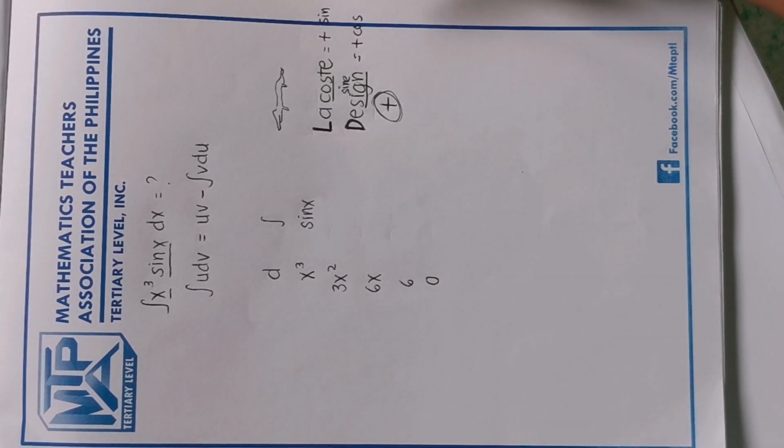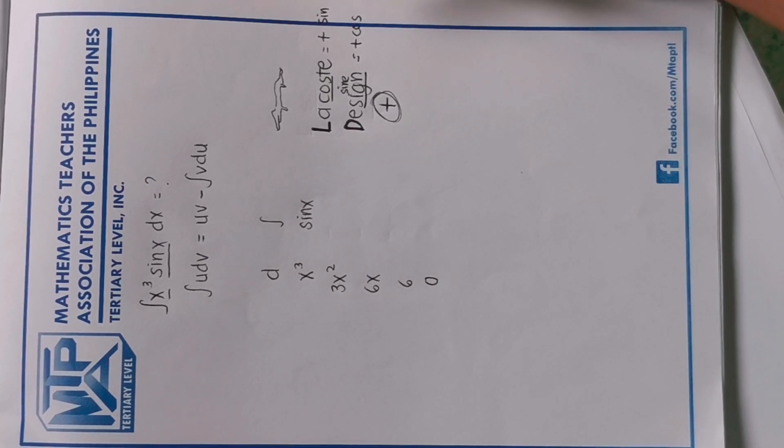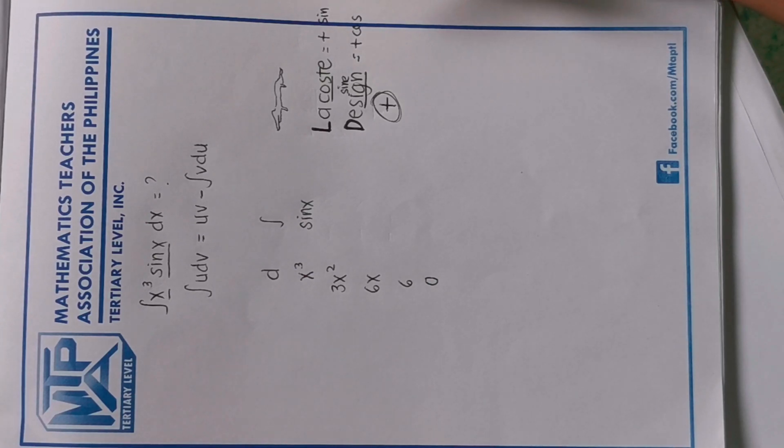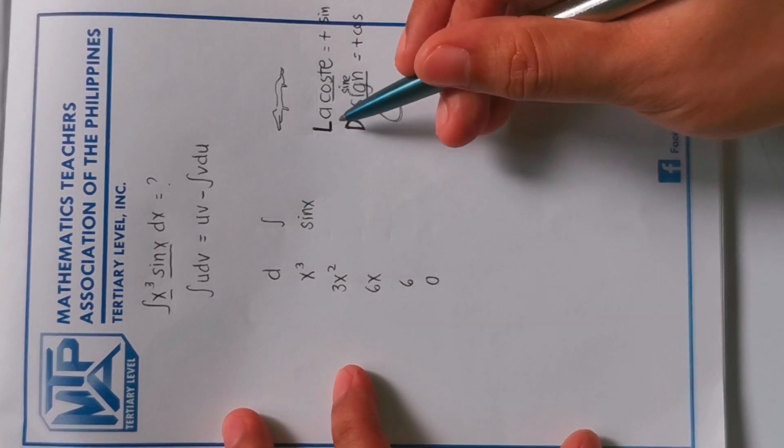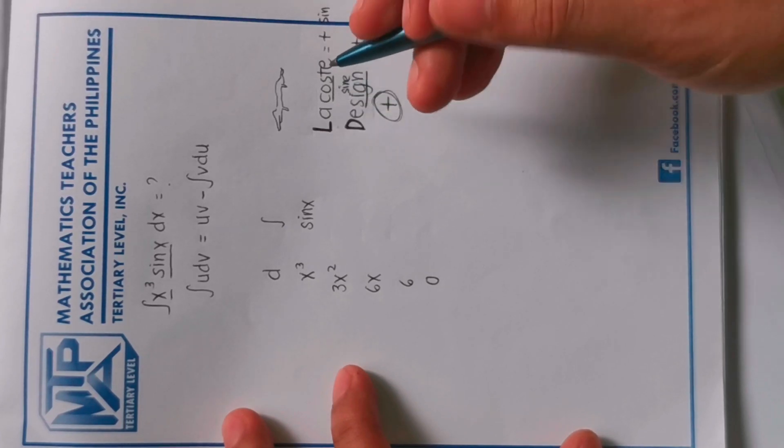So after learning this, you will not mix the signs anymore. So what is the differential of sine, negative cos or positive cos? By remembering this you will have no doubt on the signs. So what is the integral of sine? The integral of sine is negative cosine.